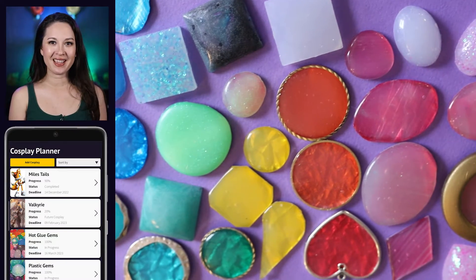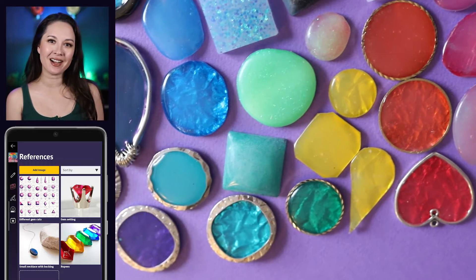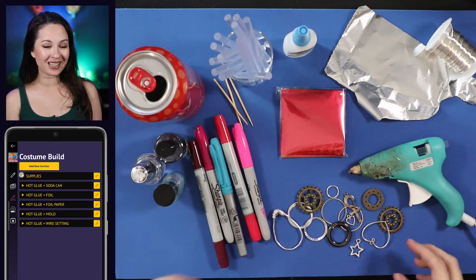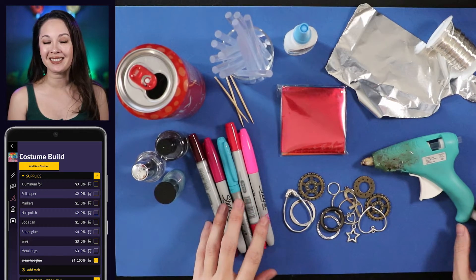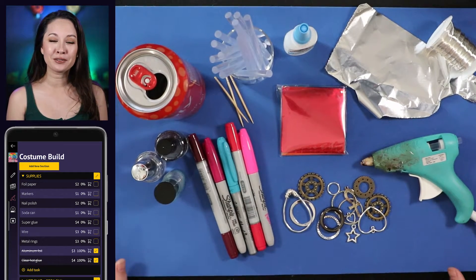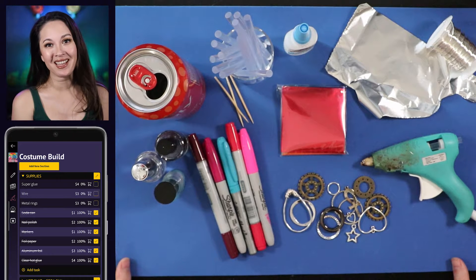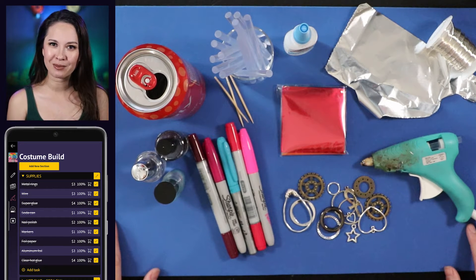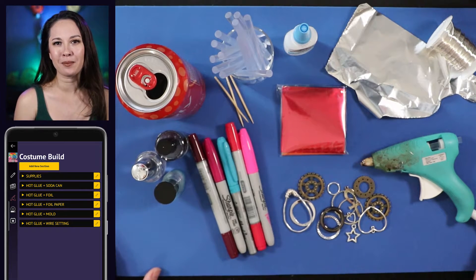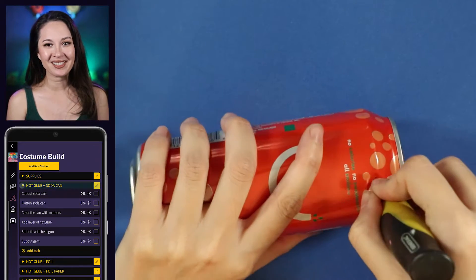Let's make some gems with hot glue and you'll want to be sure you have crystal clear hot glue sticks. Hot glue is the main ingredient for these gems but I also have lots of materials for different colors, settings, and backings including foil, foil paper, markers, nail polish, soda cans, super glue, wire, and some metal rings. I also have some silicone molds. First we're going to use the soda can.